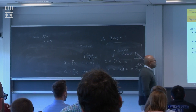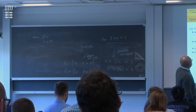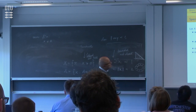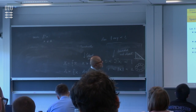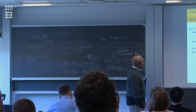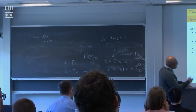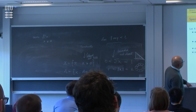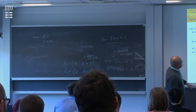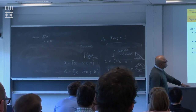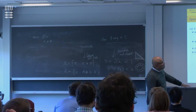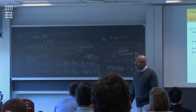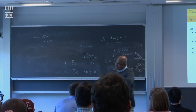Let's talk about some special sets. If X is a set in Rⁿ, we say X is a subspace when αx + βy lies in X for every x and y in X and any α, β in R. Subspaces are closed sets, but not necessarily bounded — vectors in a subspace can go off to plus infinity.